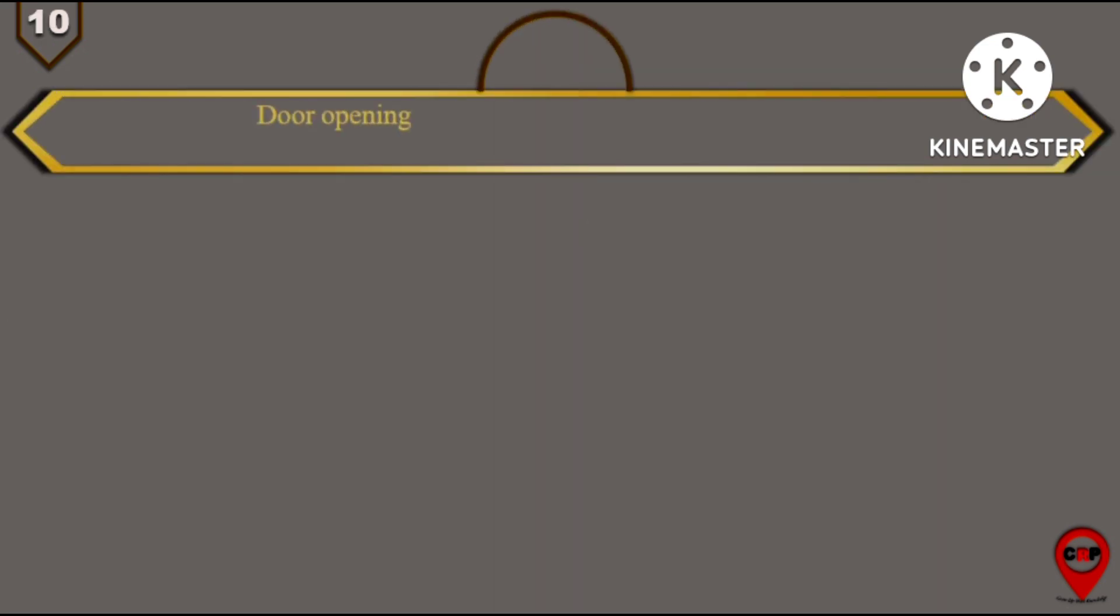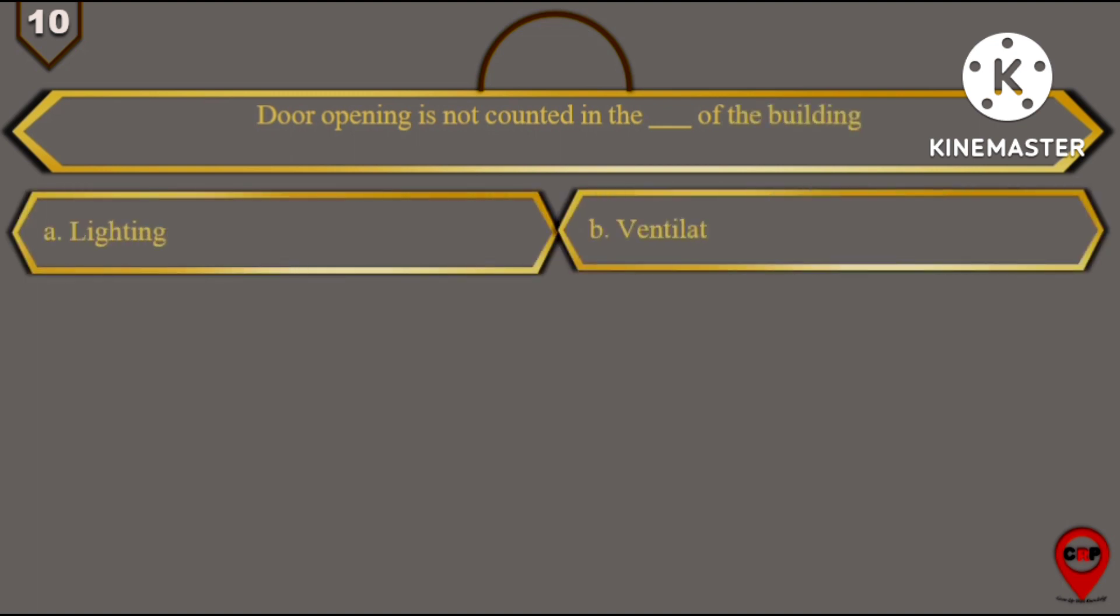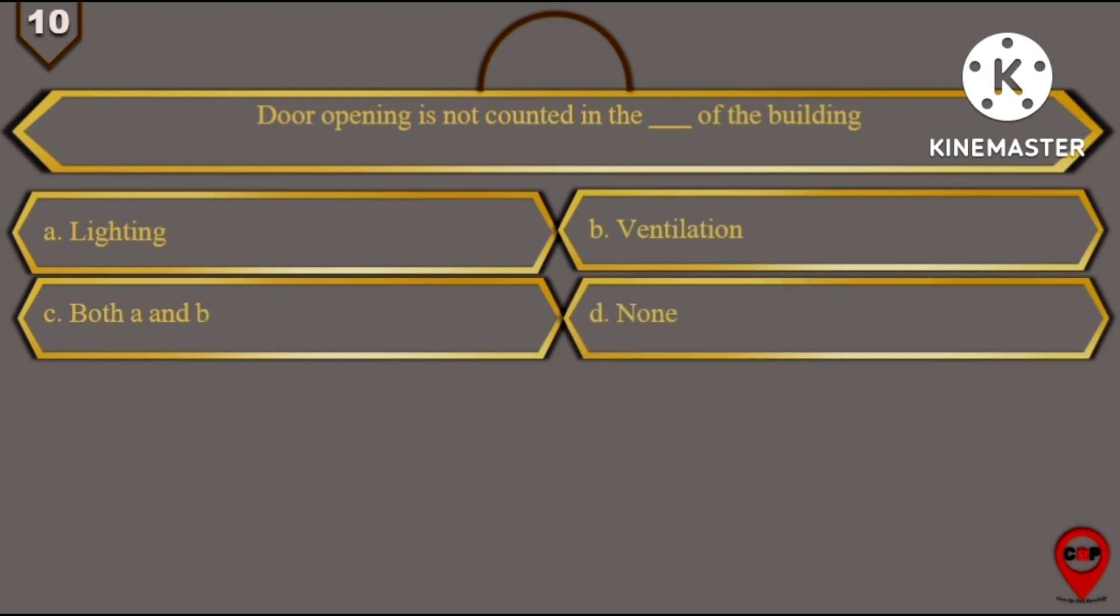Next question, question number 10: Door opening is not counted in the blank of the building. So options are: A. Lighting, B. Ventilation, C. Both A and B, and D is none of the above.